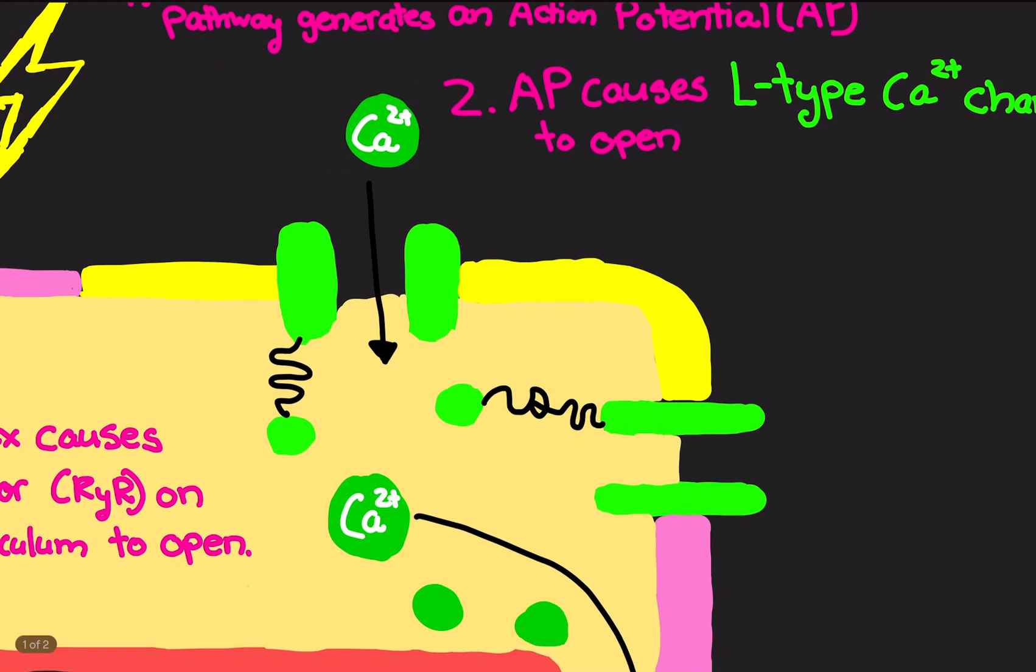The L-type calcium channel has this ball and chain kind of deal. When not exposed to electrical potential, the ball basically closes the channel so no calcium can actually go in. But since we've been exposed to electrical signal, the ball basically goes away and calcium can go inside.